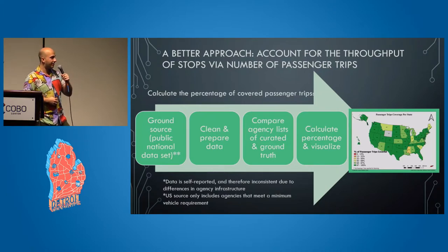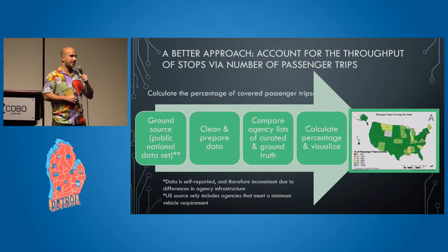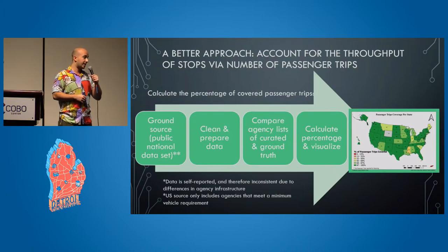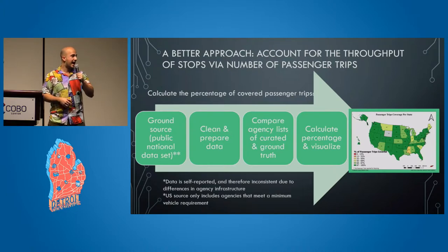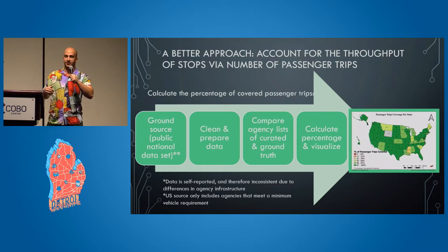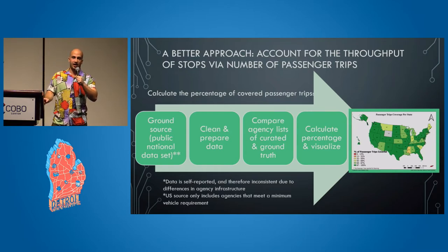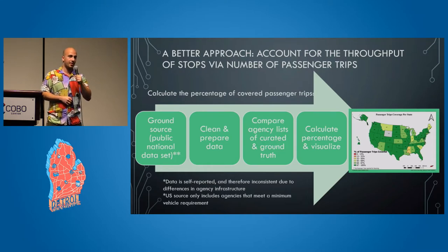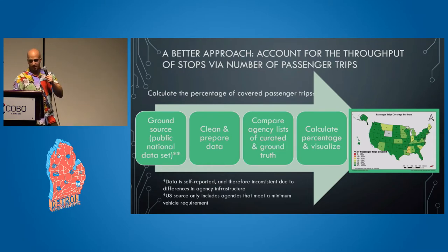On the other hand, there are some problems with the data we really need to account for. The data is self-reported, so there are going to be inconsistencies, and there's a minimum requirement for the number of vehicles you need to be part of this dataset. Those are some of the problems we noticed with the data.